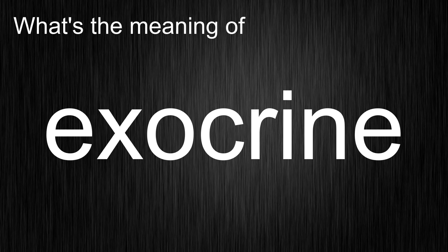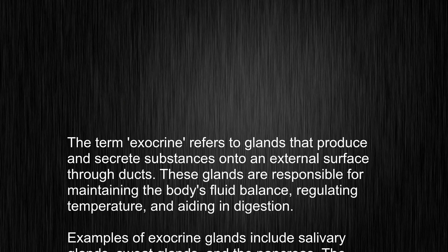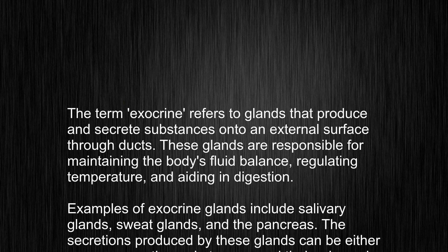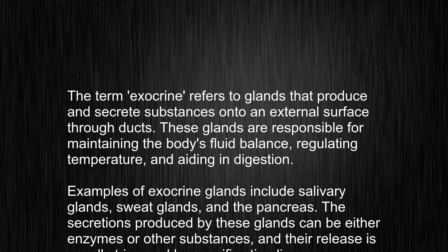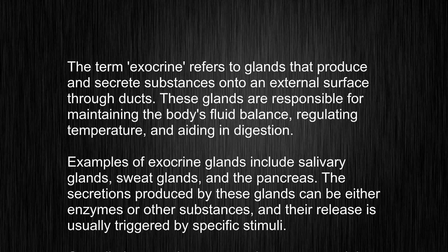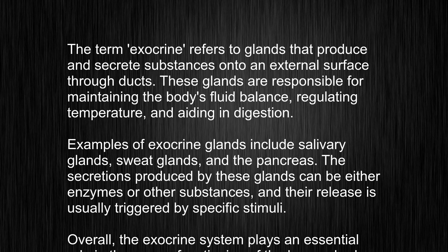The term exocrine refers to glands that produce and secrete substances onto an external surface through ducts. These glands are responsible for maintaining the body's fluid balance, regulating temperature, and aiding in digestion.